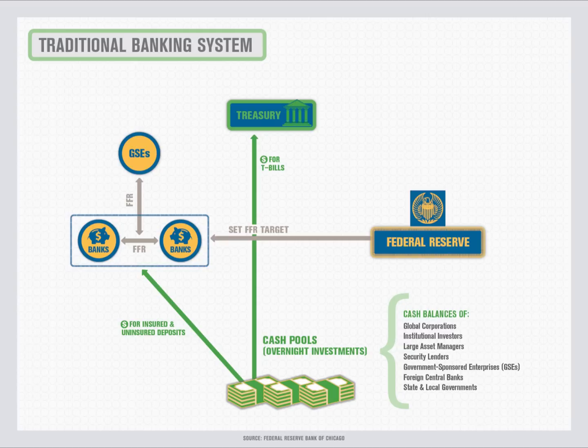During the financial crisis, the Fed cut the federal funds target rate to a zero through 25 basis point range. With its target rate at its effective zero lower bound, the Fed decided to expand the objective for open market operations to adjust the size and composition of its portfolio in order to stimulate the economy. These open market purchases of long-term government guaranteed securities are known as large-scale asset purchases.